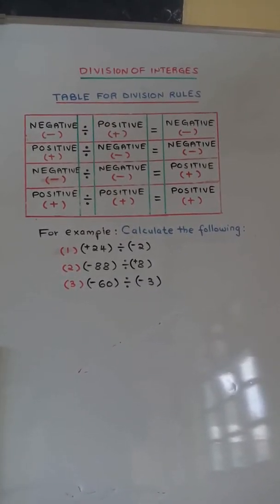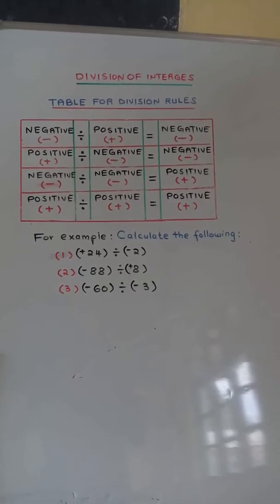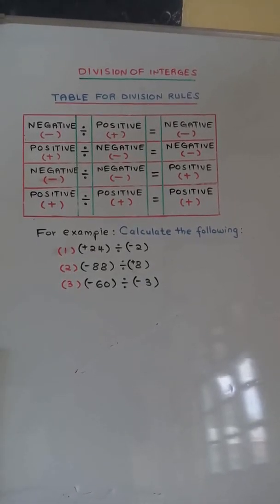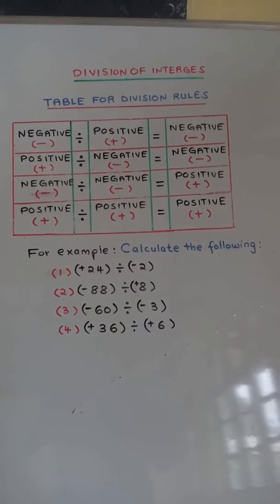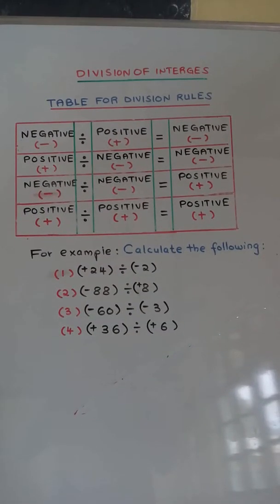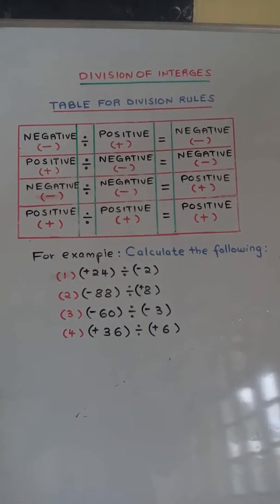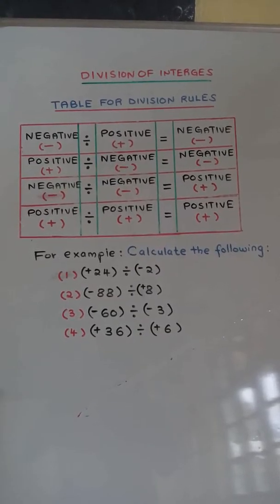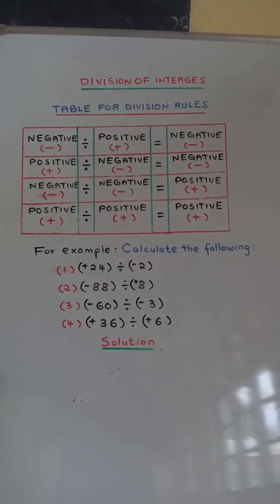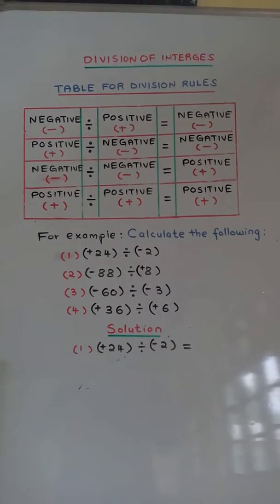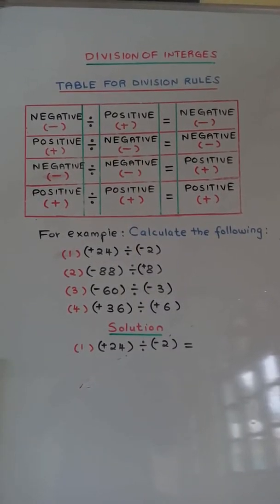Number 3: negative 60 divided by negative 3. Number 4: positive 36 divided by positive 6. Solution, Number 1: